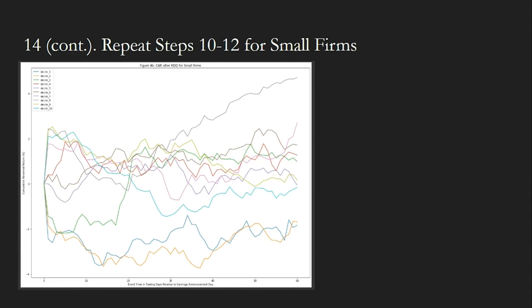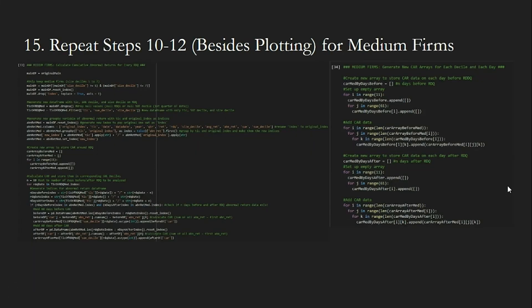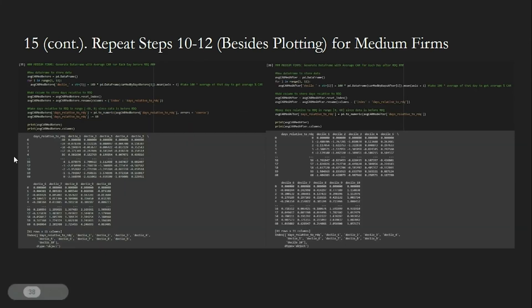RDQ is the earnings announcement date. Finally, we repeat the process for medium firms, but we don't need to plot it since it was not included in Bernard and Thomas 1989. You can use the code on the screen to repeat the process for medium firms. These are our two resulting data frames for medium-sized firms.